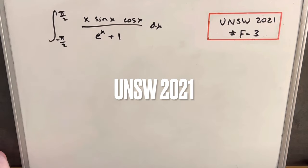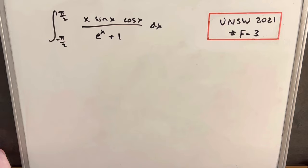Hey, we have here today a pretty difficult-looking integral. This one's from UNSW 2021 final round, problem 3. We have the integral from minus pi over 2 to pi over 2, x sine x cos x over e to the x plus 1 dx.